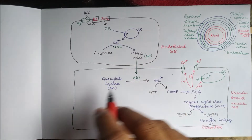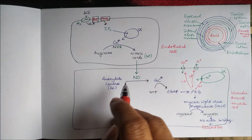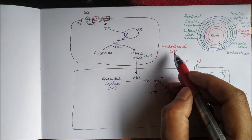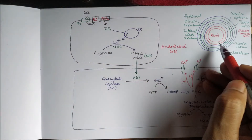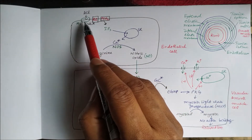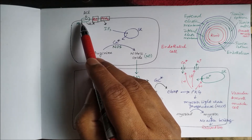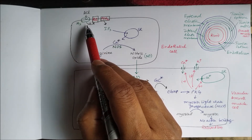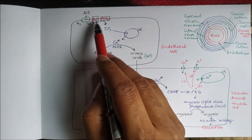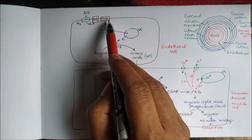The endothelium contains endothelial cells, and tunica media contains smooth muscle cells. The M3 receptor is present on the endothelial cells in the endothelium. When acetylcholine binds to this M3 receptor — which is a G-protein coupled receptor — it is linked to phospholipase C, and phospholipase C converts phosphatidylinositol diphosphate (PIP2)...